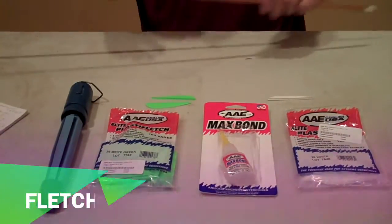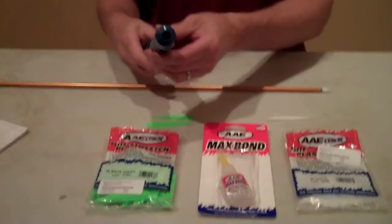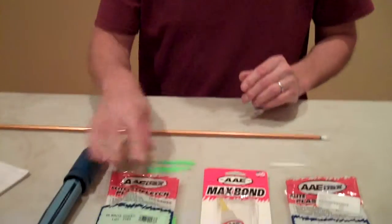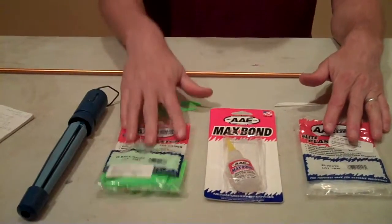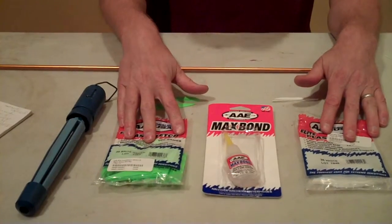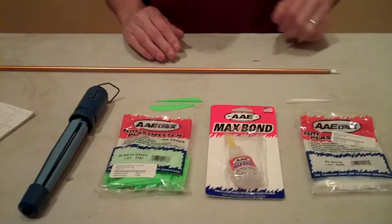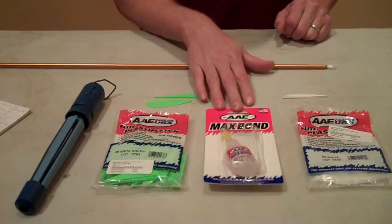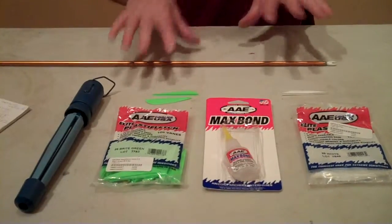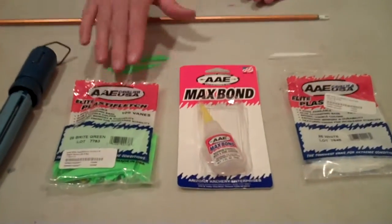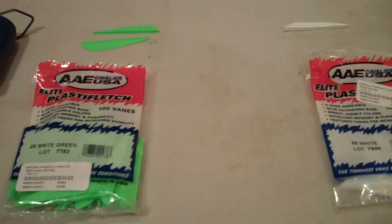We're going to go ahead and start the fletching. To fletch your arrows, you're going to need your Easy Fletch Jig, your fletchings. One will be the index and the other two will be your hens. So you have two of those, one of your index and the Max Bond glue. These products are by AAE Archery. You should be doing all these with AAE Archery glue and vanes. And we'll go over why that's important in a minute.